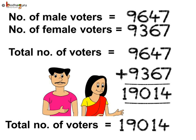Let us see again how we solve this problem. Number of male voters is equal to 9,647. Number of female voters is equal to 9,367. To find the total number of voters, we add 9,647 plus 9,367. Thus, the total number of voters in that village are 19,014.